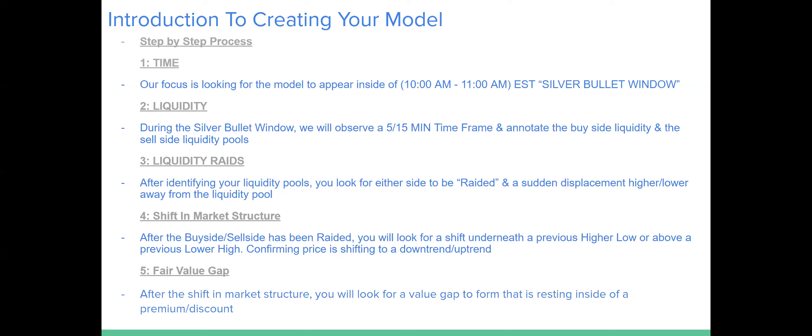You're going to sit down during the New York session and look for a one-hour window, mark up your liquidity pools on a 15-minute time frame, looking at your highs and lows — marking out buy-side and sell-side. Then you're looking to see if a liquidity raid has happened or is about to happen, then look for a shift in market structure — a displacement away from the liquidity pool confirming a trend shift. The fifth thing is looking for a fair value gap. After the market structure shift, you will look for a fair value gap to form that is resting inside of a premium or a discount.